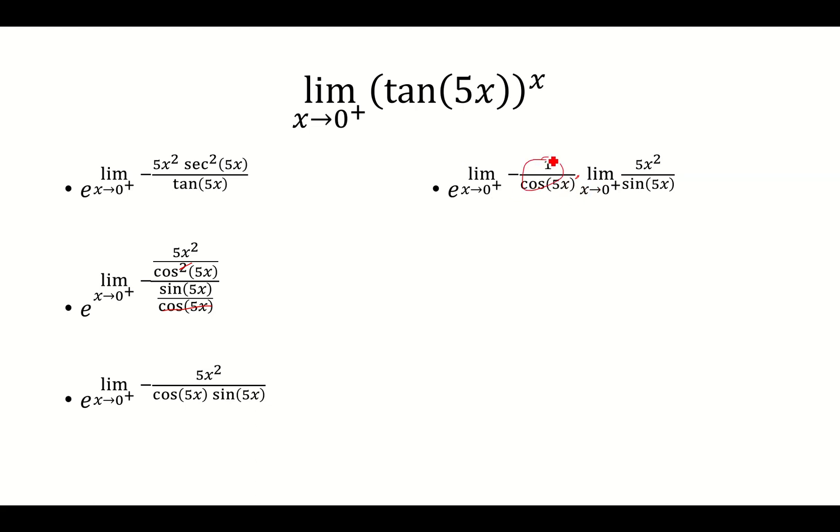This now will go to negative 1, and now I just need to solve for 5x squared over sine 5x, which here you get 0 over 0, so you use L'Hopital's rule.